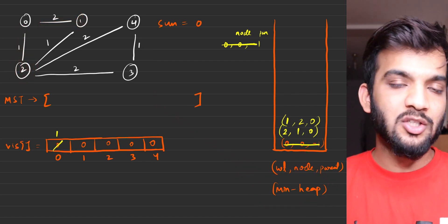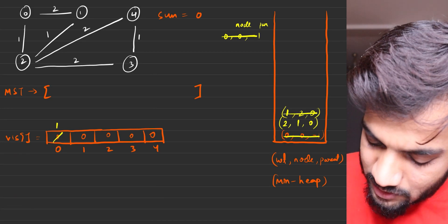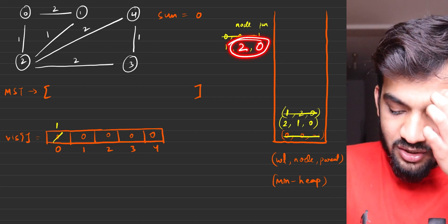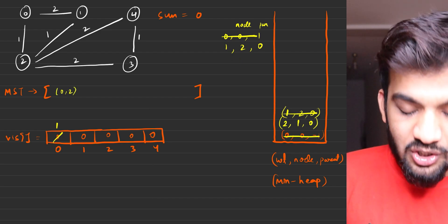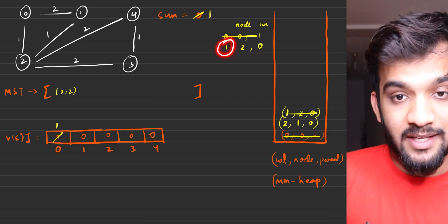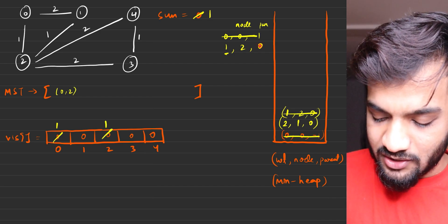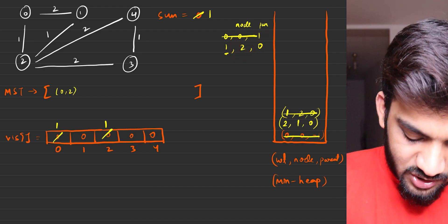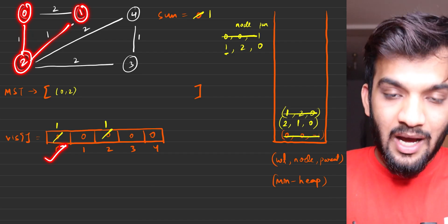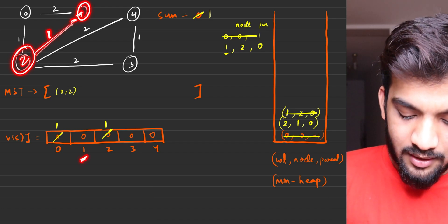The minimum heap always gives the least weight at the top, so we get (1, 2, 0) — edge weight 1, node 2, parent 0. This edge 0-2 is a part of your MST; add its weight to the sum. Mark node 2 as visited. Now standing at node 2, look at adjacent nodes. Node 0 is already visited, skip it. Node 1 is unvisited, so standing at 2 looking at 1 — edge weight is 1.